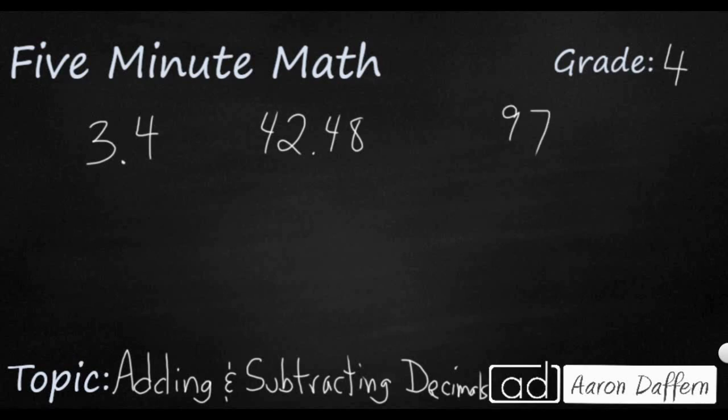add numbers that do not all go to the same decimal place. So right now you've got three different numbers on this screen: 3.4, 42.48, and 97. The key is to always line up the decimal, and what's going to happen is you're going to have some digits kind of sticking out hanging out in space, and that's perfectly fine.